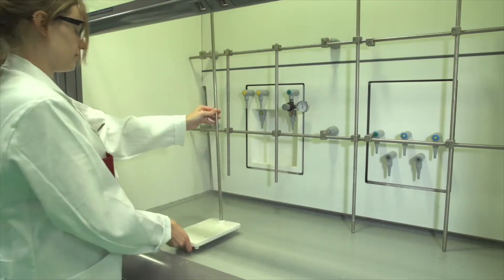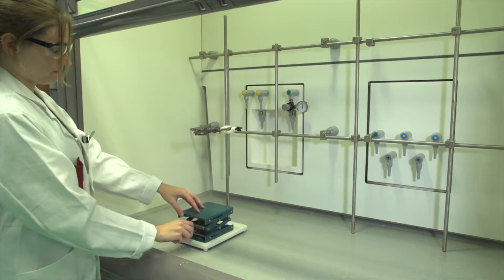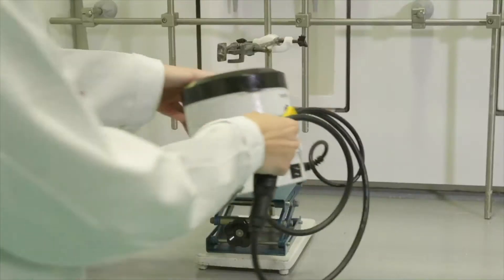Place the stand in the fume hood and attach a clamp to it. A support jack is placed on the foot of the stand. The isomantle is placed on this.